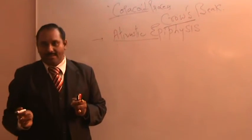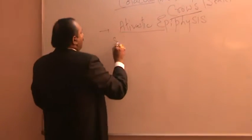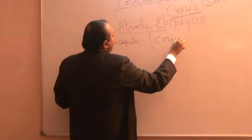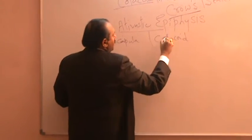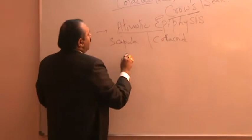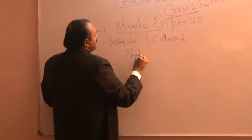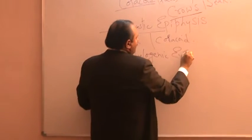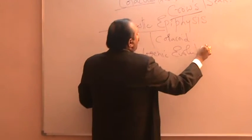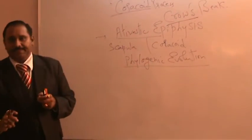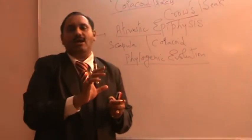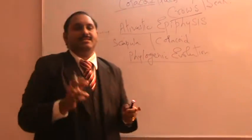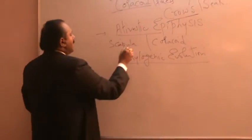So if you take the lower animals, scapula and coracoid, they are two different bones. But in humans over the period of or over the phylogenetic evolution, it had lost its individual identity. The coracoid process had lost its individual identity. It had come and stuck to the scapula as a result of which you take it as one element.